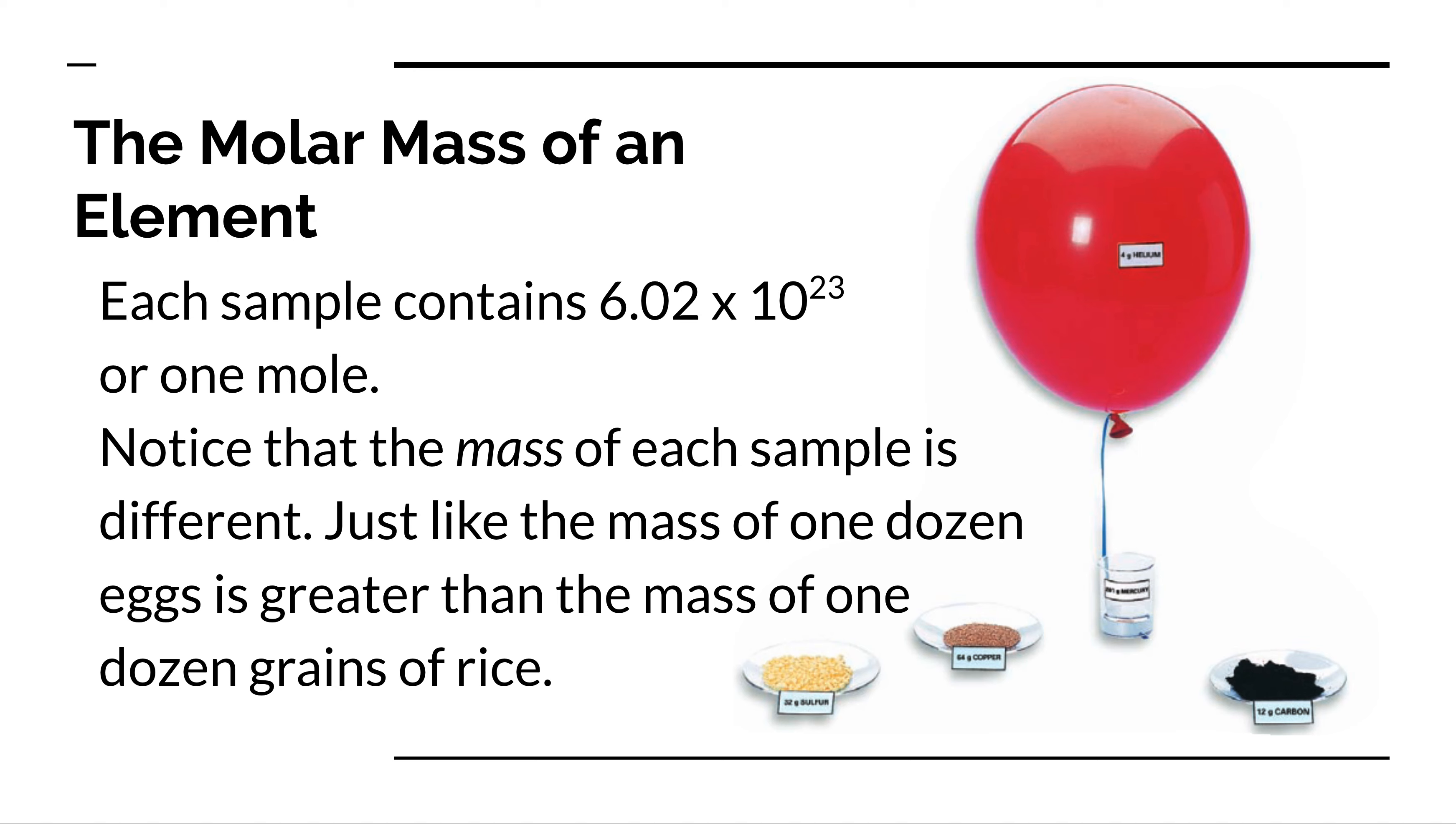So even though it's a little blurry to see in this diagram, we can see that there's 32 grams of sulfur, there's 64 grams of copper, 4 grams of helium, 12 grams of carbon. All of those represent a single mole. You can tell which one has the biggest particle just by looking at what the mass is, because each of these is the same number of particles. It's just the particles themselves are bigger.